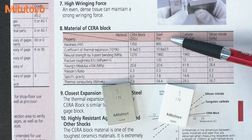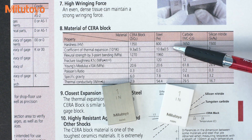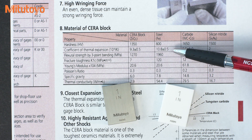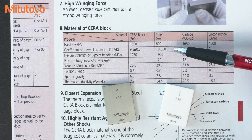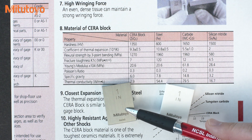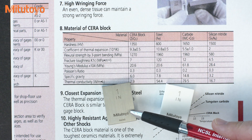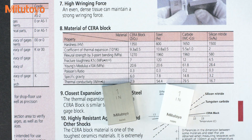Our steel gauge blocks expand at 10.8 parts per million per degree Celsius — that means 10.8 microns per meter, or 10.8 millionths, or 10.8 microinches per inch for every 1 degree Celsius of change. At 21 degrees Celsius, this 1 inch steel gauge block will have grown 10.8 millionths of an inch bigger than at the reference temperature of 20 degrees C.